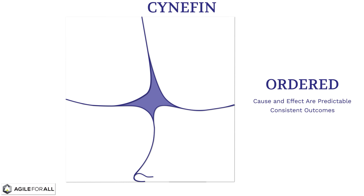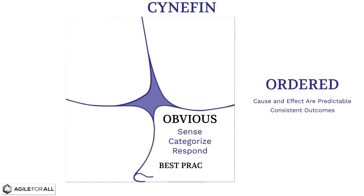The right side is divided into two types of ordered systems. On the bottom, cause and effect are obvious to any reasonable person without study. In an obvious system, the decision-making process is to sense the problem or opportunity, categorize it, and then respond with the best practice for that category. This is the only domain in the framework where best practices are appropriate.